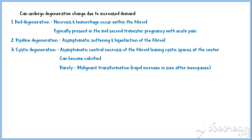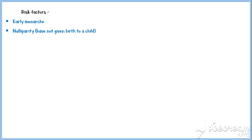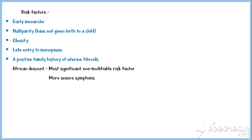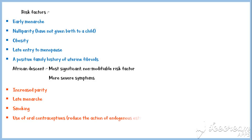Rarely, cystic degeneration can lead to malignant transformation, and these malignant tumors increase rapidly in size after menopause. Although etiology is uncertain, risk factors associated with uterine fibroids include early menarche, nulliparity, obesity, late entry to menopause, and a positive family history. African descent is the most significant non-modifiable risk factor. Protective factors associated with a reduced risk include increased parity, late menarche, smoking, and use of oral contraceptives, which reduce the action of endogenous estrogen.